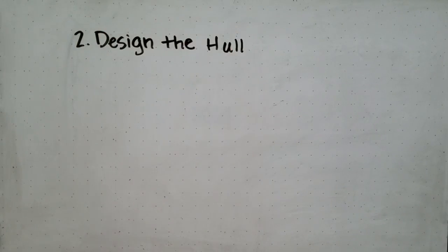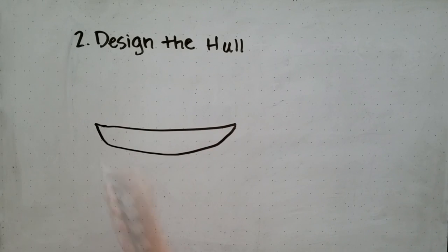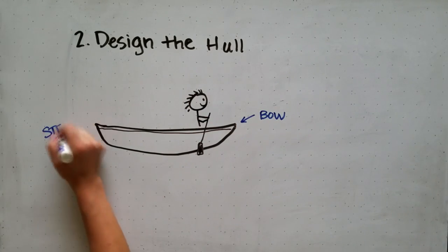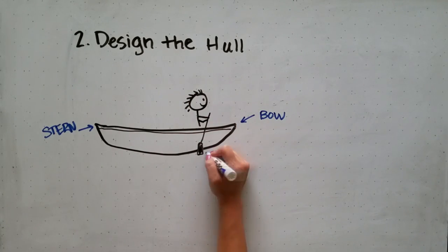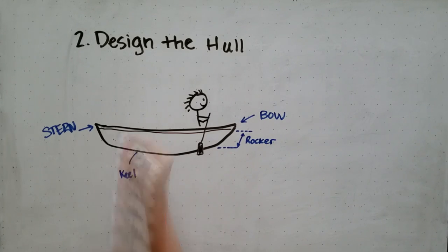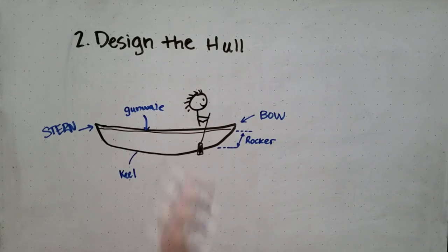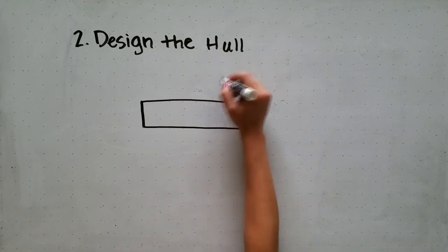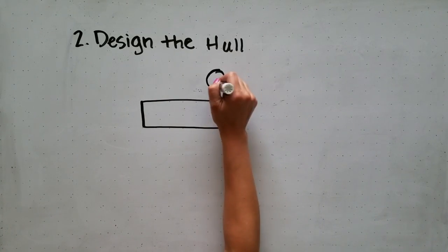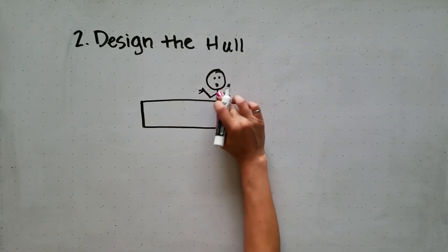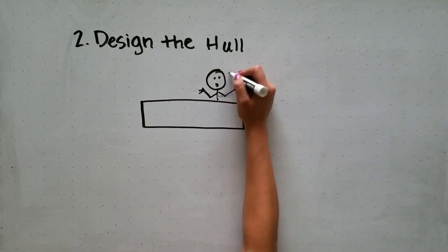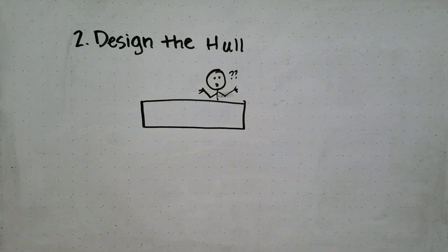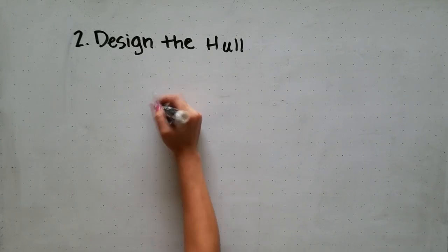The next step is to design the hull. The canoe hull consists of a bow, stern, rocker, keel, and gunnel. The main thing you have to think about when designing a canoe is the shape. Obviously, you don't want to design a canoe like a box because that's not going to go through the water very well.